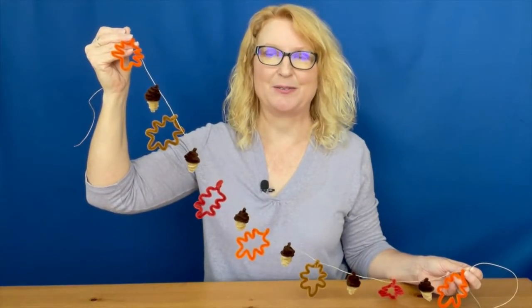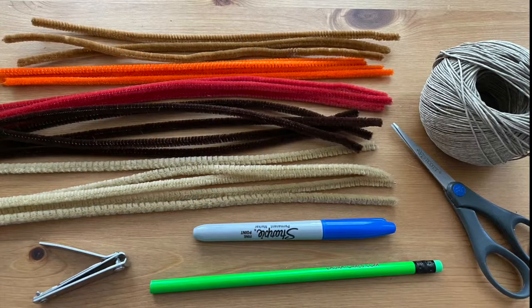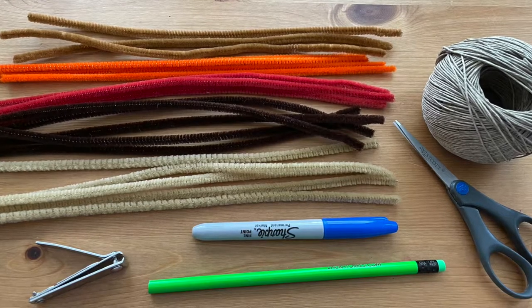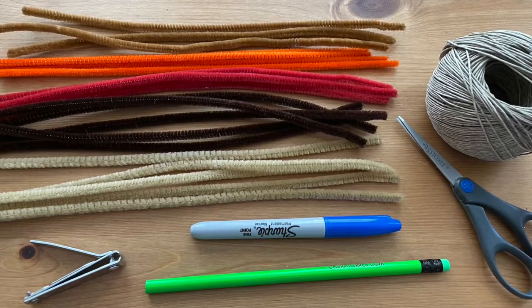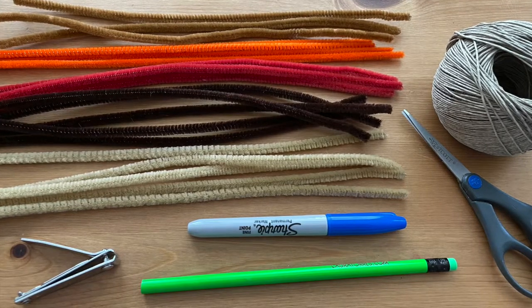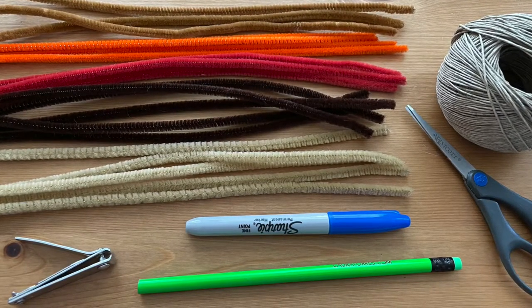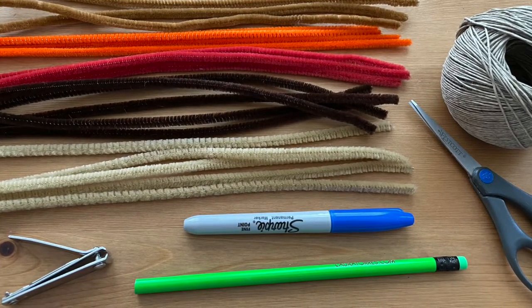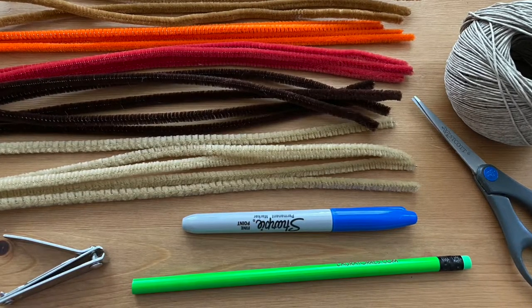This fall garland of acorns and leaves made out of pipe cleaners is inexpensive and easy to make. For this project you will need tan and dark brown pipe cleaners for the acorns, two or three different colors of pipe cleaners for the fall leaves, fingernail clippers, a thick marker, a pencil, scissors, and twine.